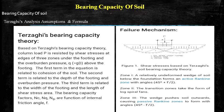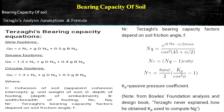Zone 1 is a relatively undeformed wedge of soil below the foundation forming an active Rankine zone with angles 45 degrees plus phi by 2. Zone 2, the transition zone, takes the form of logarithmic spiral fans. Zone 3 pushes soil outward causing the passive Rankine zone to form with angle 45 degrees minus phi by 2. The basic Terzaghi bearing capacity equation is: QF equal to C·Nc plus gamma·D·Nq plus 0.5·gamma·B·N-gamma, where C equals cohesion of soil and Nc equals bearing capacity factor due to cohesion.